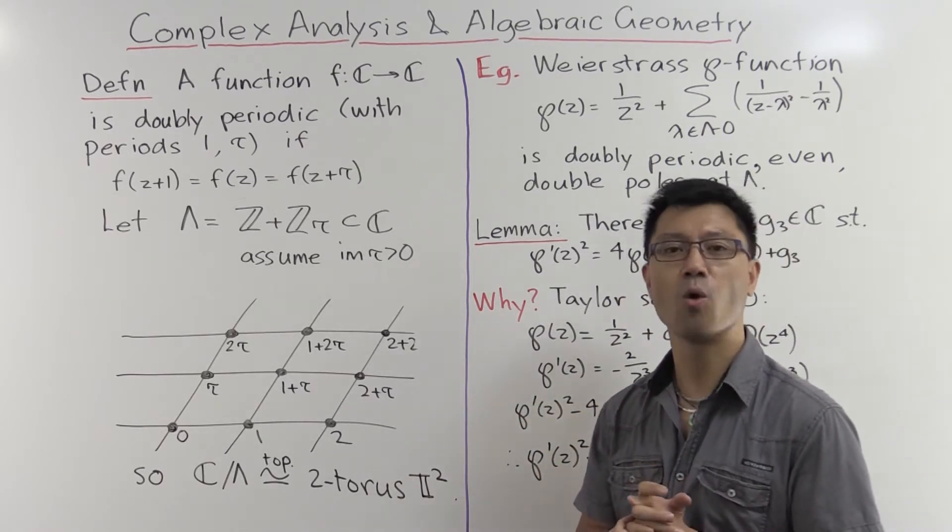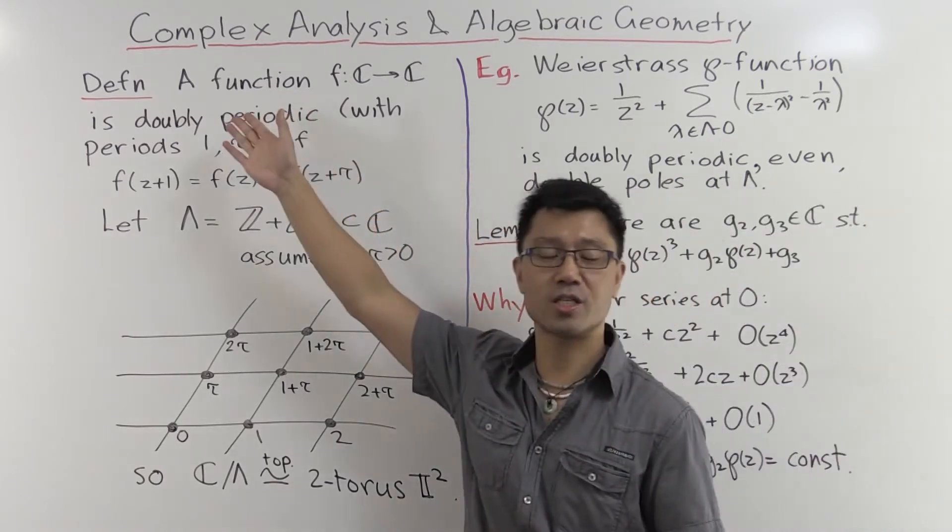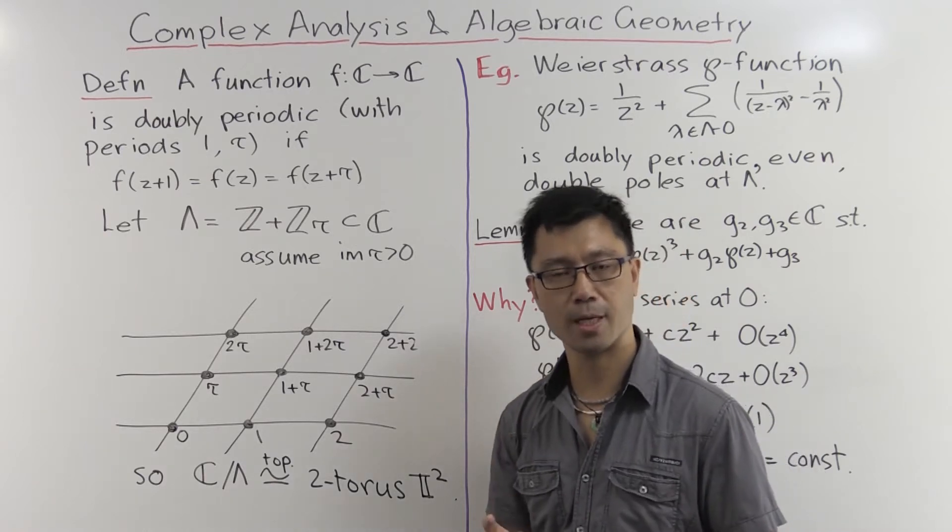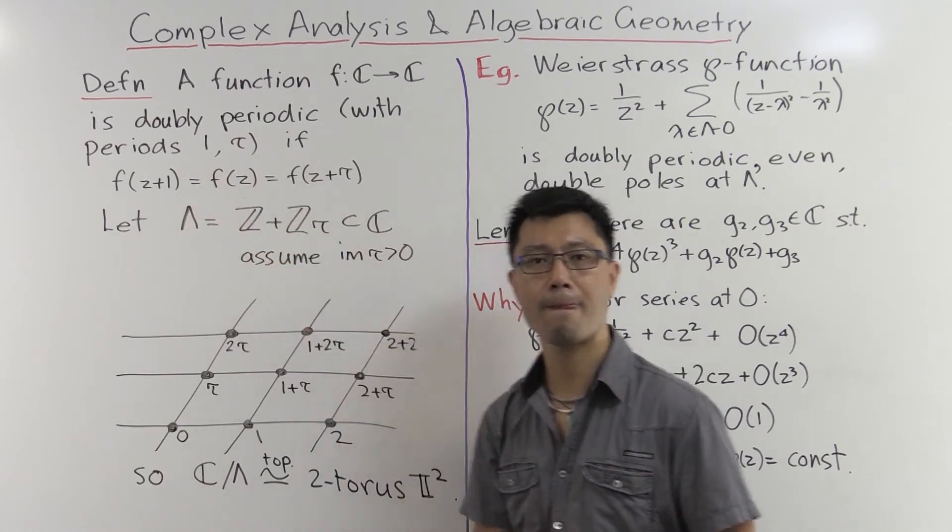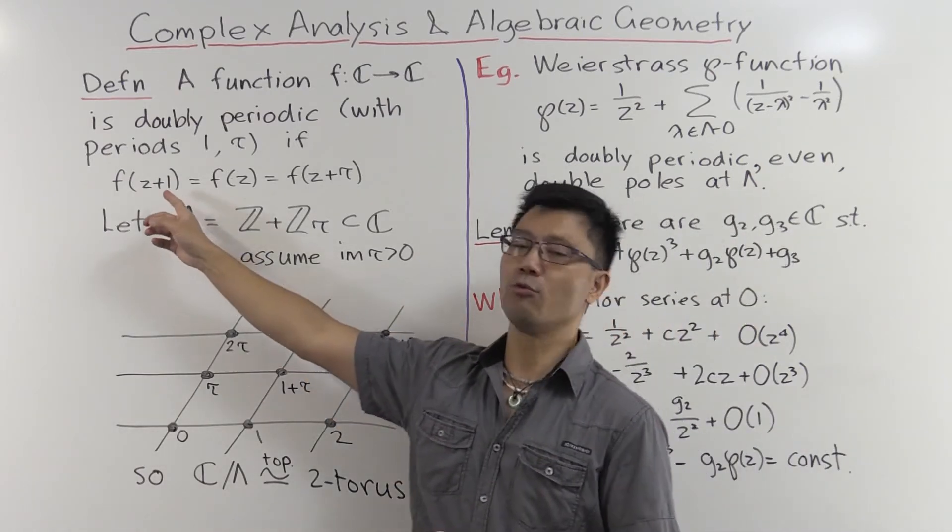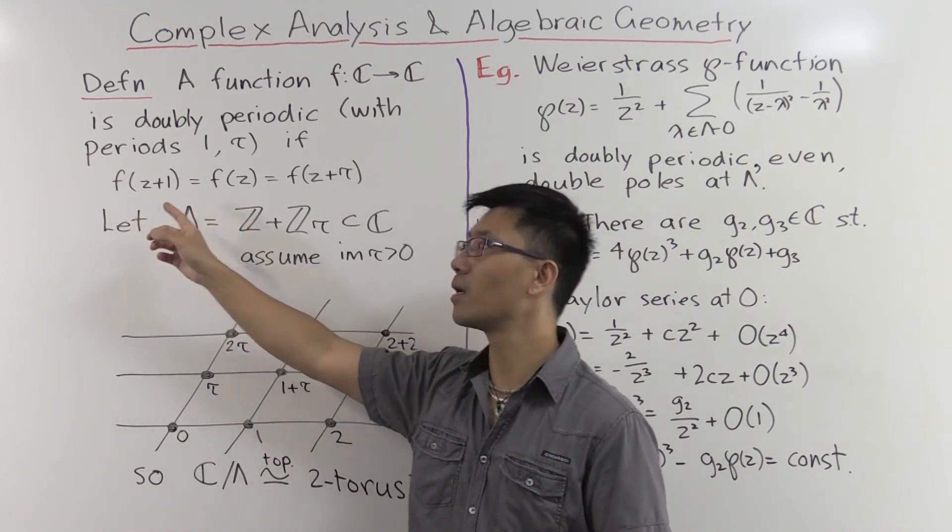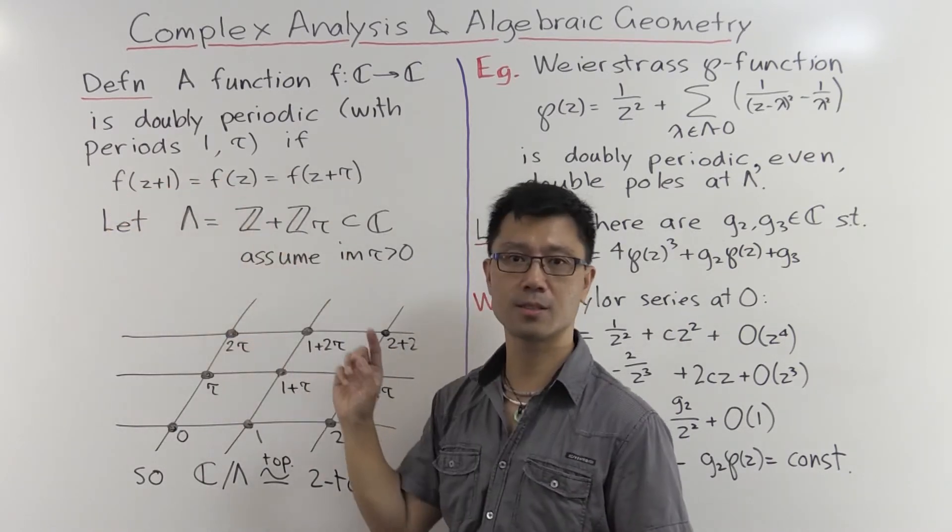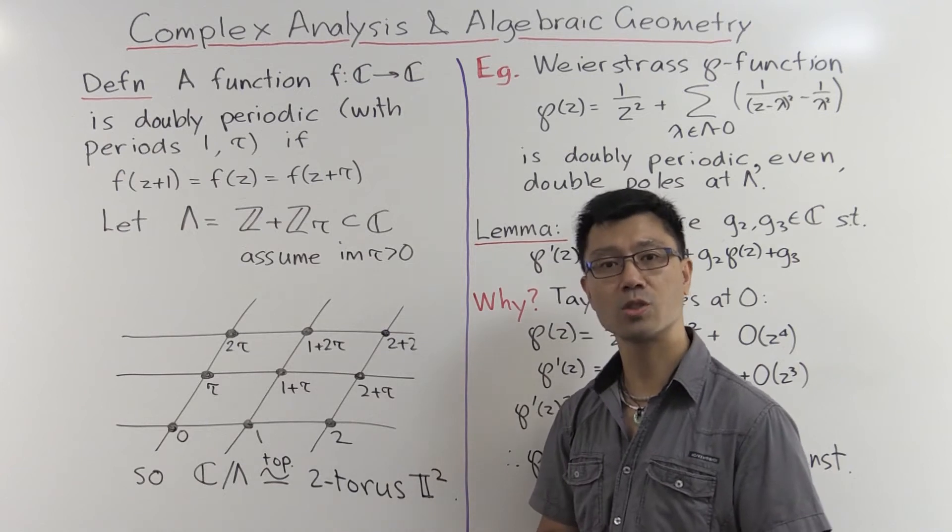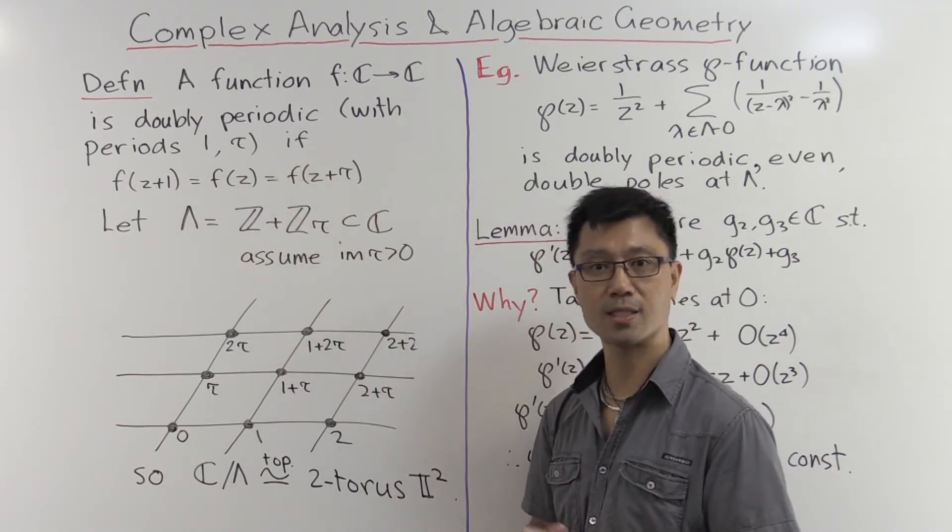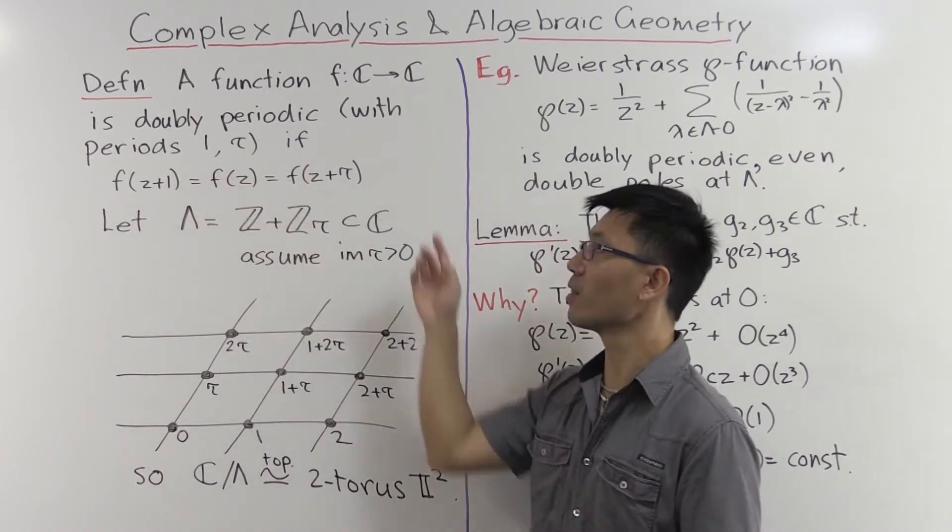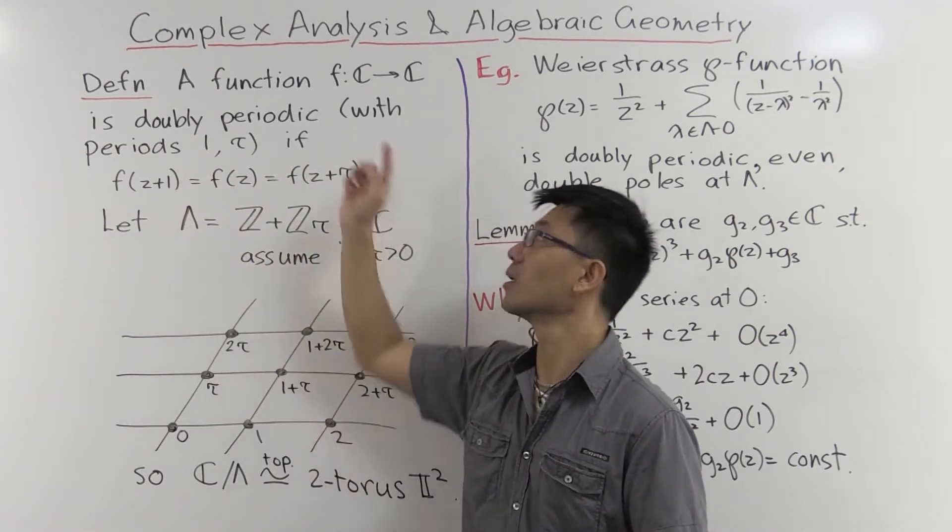Let's start by reminding ourselves what a doubly periodic function is. We're going to look at functions f from ℂ to ℂ. Doubly periodic means that instead of having one period, there are two. So we're going to assume two periods, 1 and τ. Usually we're going to assume that the imaginary part of τ is actually positive. Remember, if you had a periodic function with period 1, that means f(z+1) = f(z). So we certainly want this condition, and we also want to be periodic with respect to τ, which means f(z+τ) = f(z) as well.